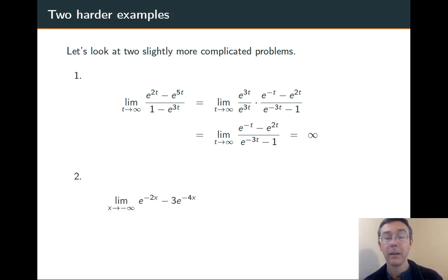Problem two: limit as x goes to negative infinity of e^(-2x) - 3e^(-4x). Both of these exponentials are going towards positive infinity. If I imagine plugging in large negative numbers for x, I get something that looks like infinity minus infinity. That's indeterminate—we can't tell which infinity is winning. We have to do a little more work.